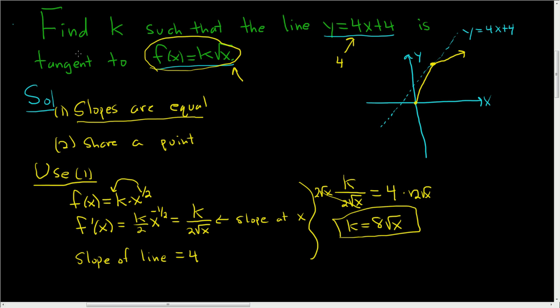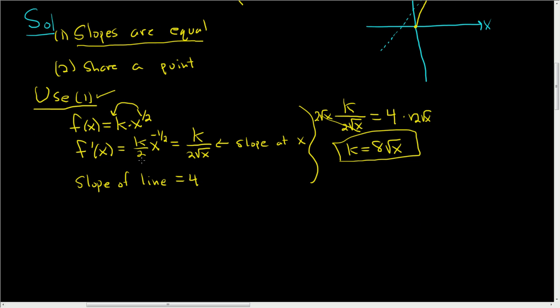So we have something relating k and x. The question is to find k. So we've used the first condition. To recap, we knew that the slopes were equal. So we took the derivative of f at x. That is the slope at x. And we set it equal to the slope of the line. So you take the derivative and set it equal to 4. Because that's the slope of your line. Now we know that our function and the line share a point.